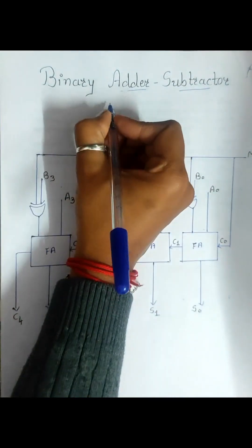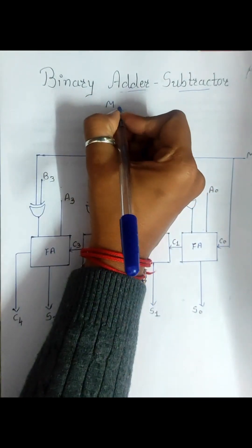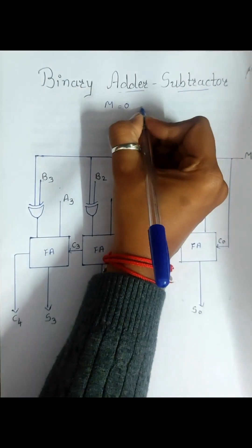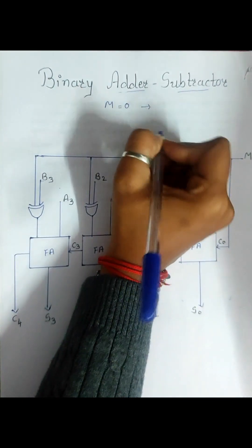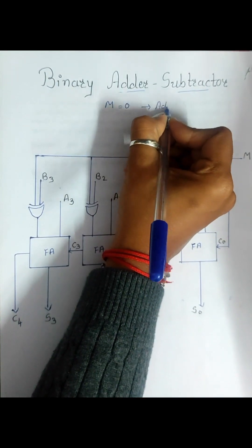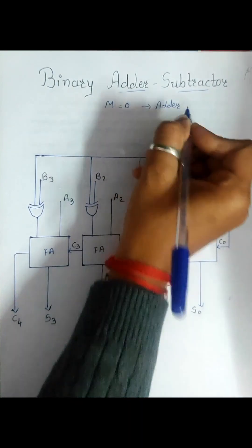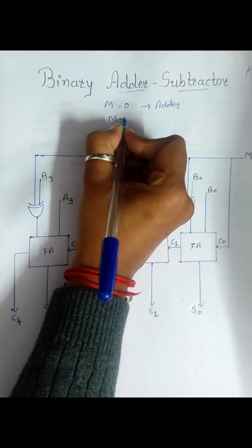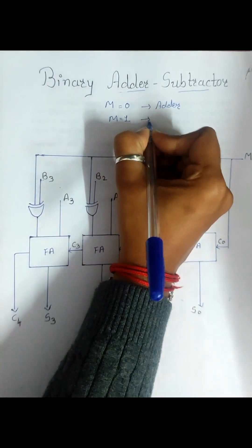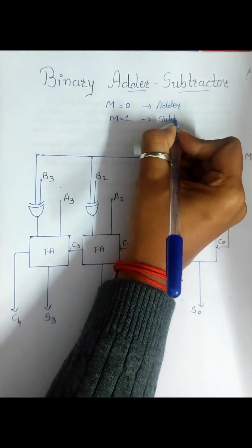This is based on input m. If m is equal to 0, then this circuit will work as an adder, and if m is equal to 1, then the same circuit will work as a subtractor.